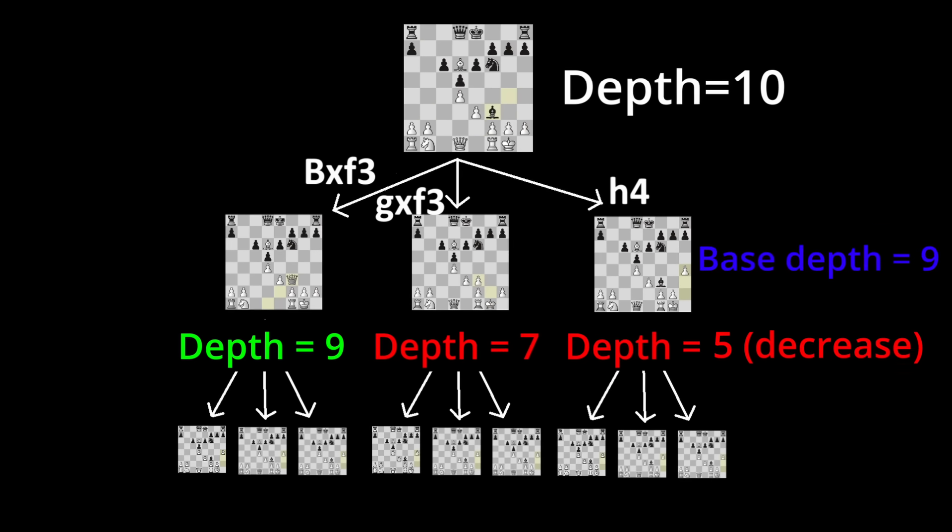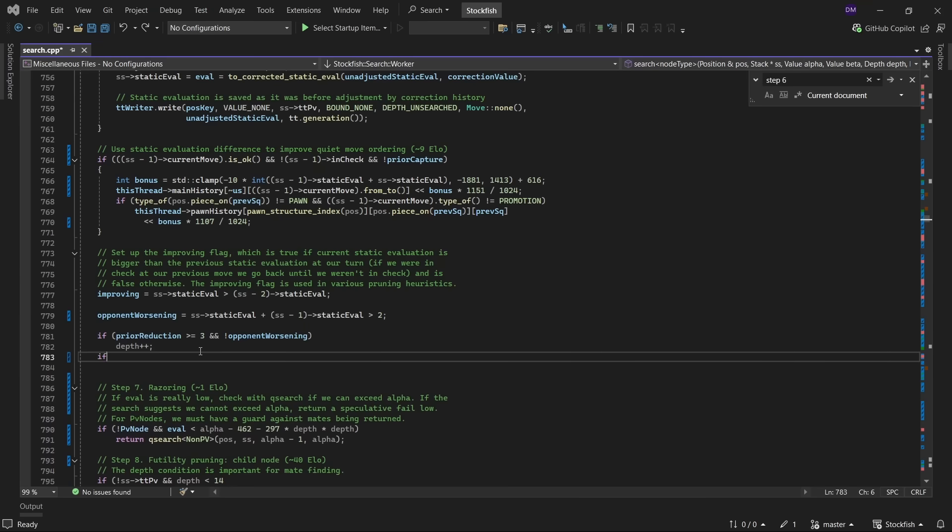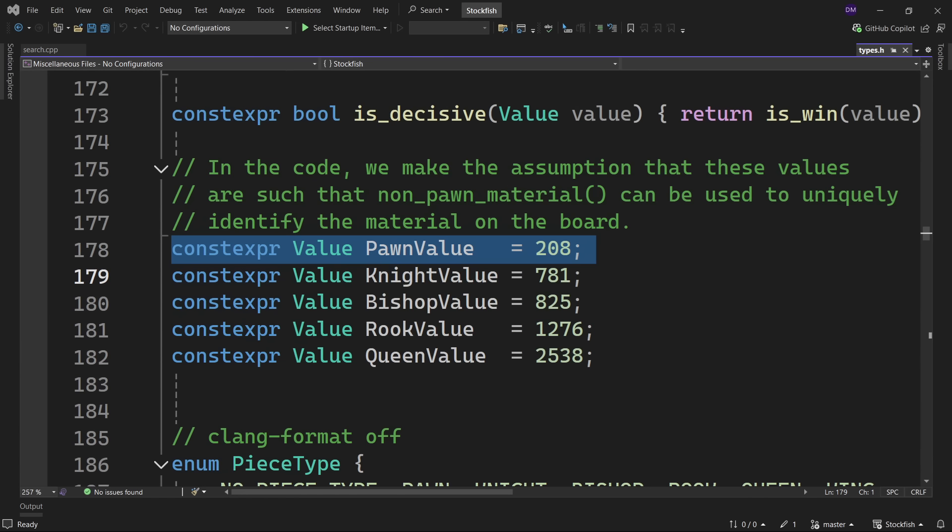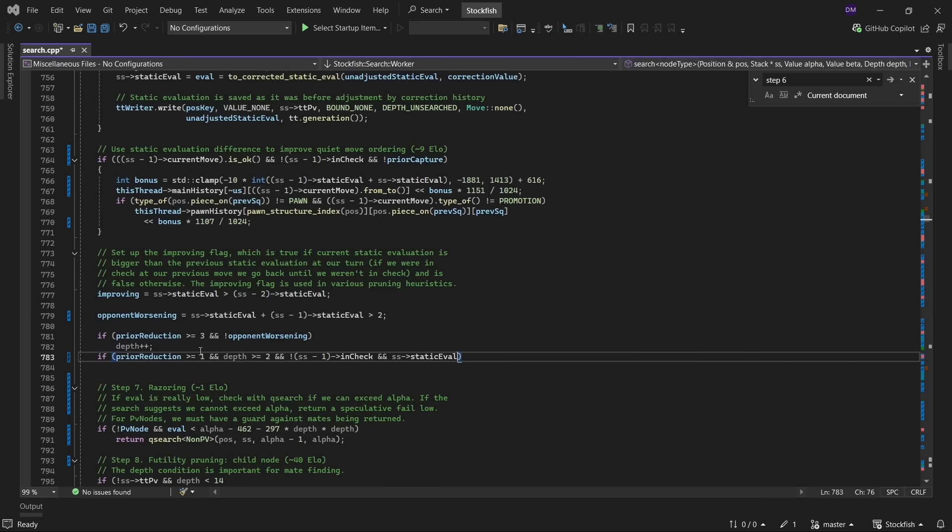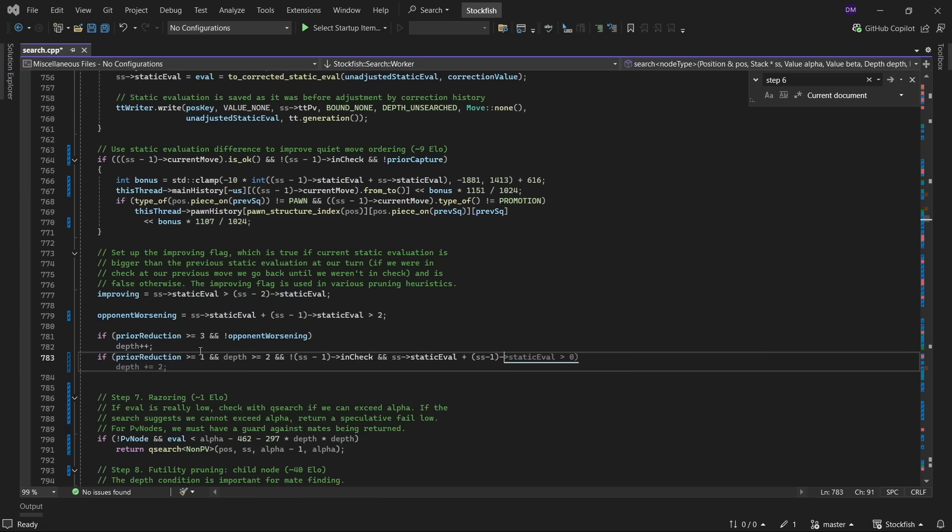For my first test of this idea, I increased the reduction when the static evaluation dropped by 200 internal units, which is about the value of a pawn. I was pretty careful when I implemented this idea, since decreasing the depth can have dangerous side effects.